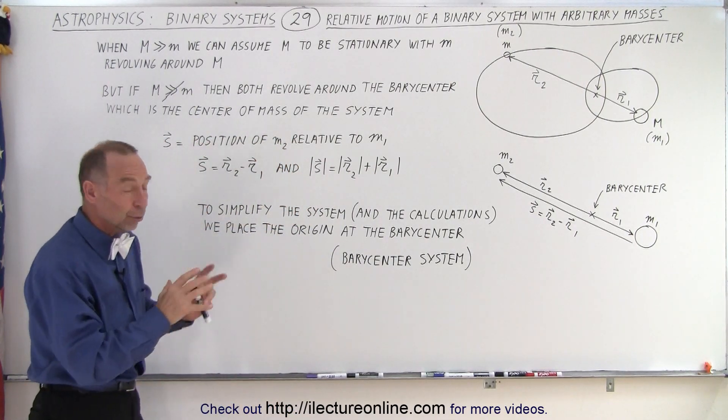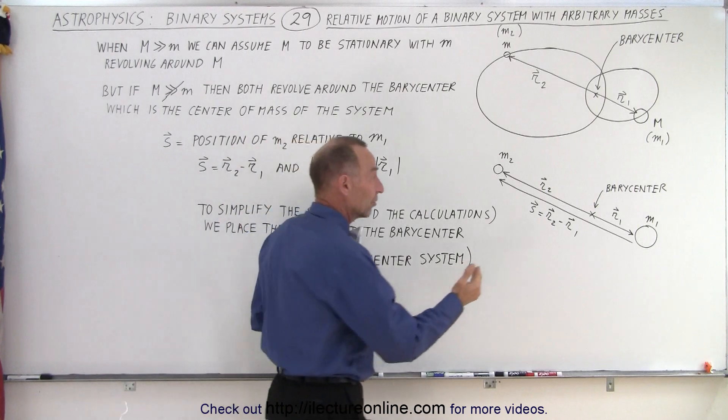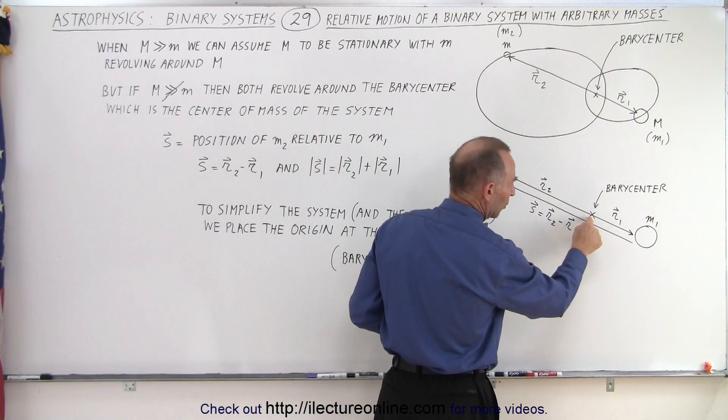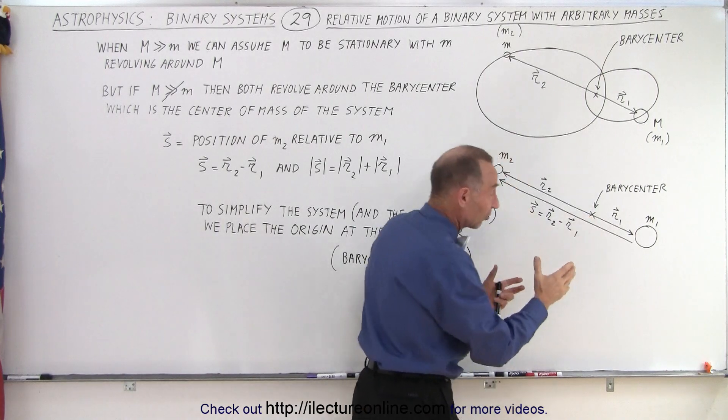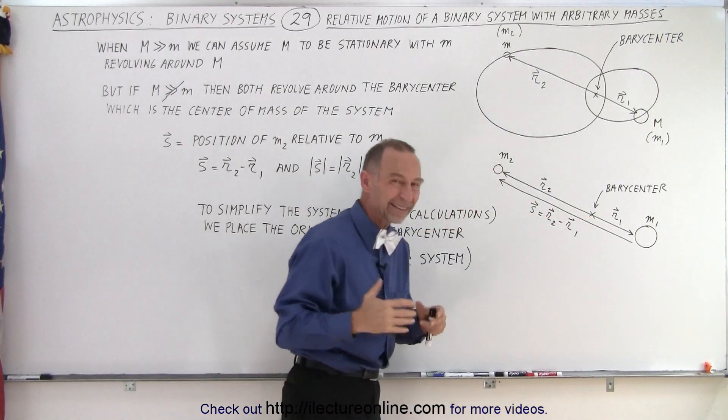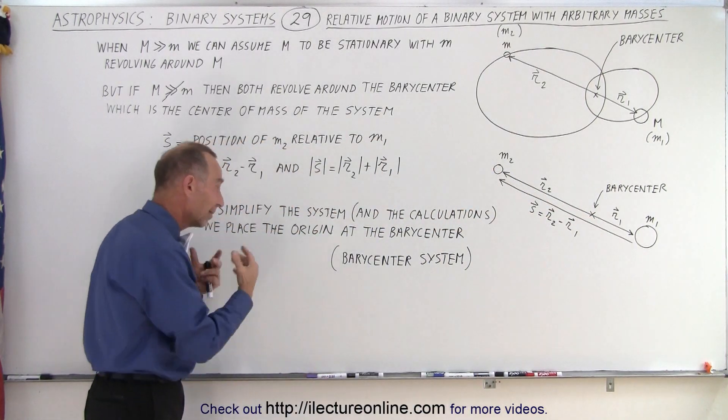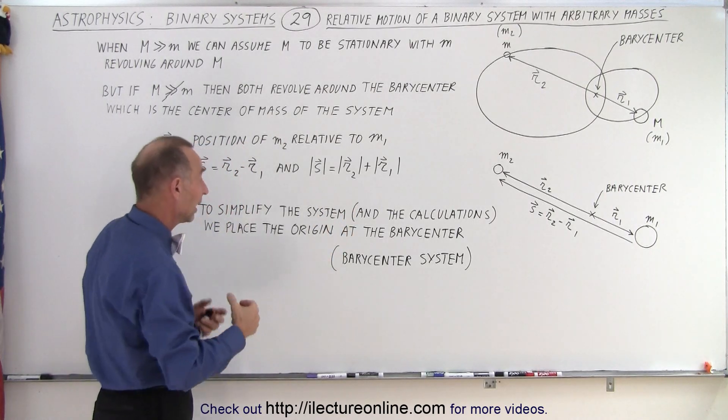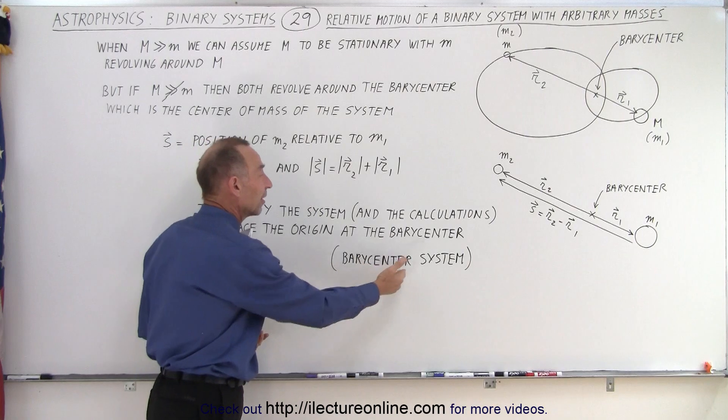Now, we want to put that into a coordinate system. And since the barycenter is essentially a stationary point in space, it makes a lot of sense to put the origin of our coordinate system right at the barycenter. So that's typically what we like to do. It simplifies the system. It simplifies the calculations we're going to do. And we call that the barycenter system.